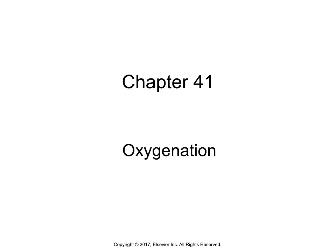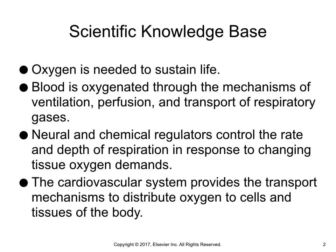Chapter 41: Oxygenation. Scientific knowledge base: oxygen is needed to sustain life. Blood is oxygenated through the mechanisms of ventilation, perfusion, and transport of respiratory gases. Neural and chemical regulators control the rate and depth of respiration in response to changing tissue oxygen demands. The cardiovascular system provides the transport mechanisms to distribute oxygen to cells and tissues of the body. Please review anatomy and physiology of the respiratory and cardiovascular systems as a supplement to this PowerPoint.